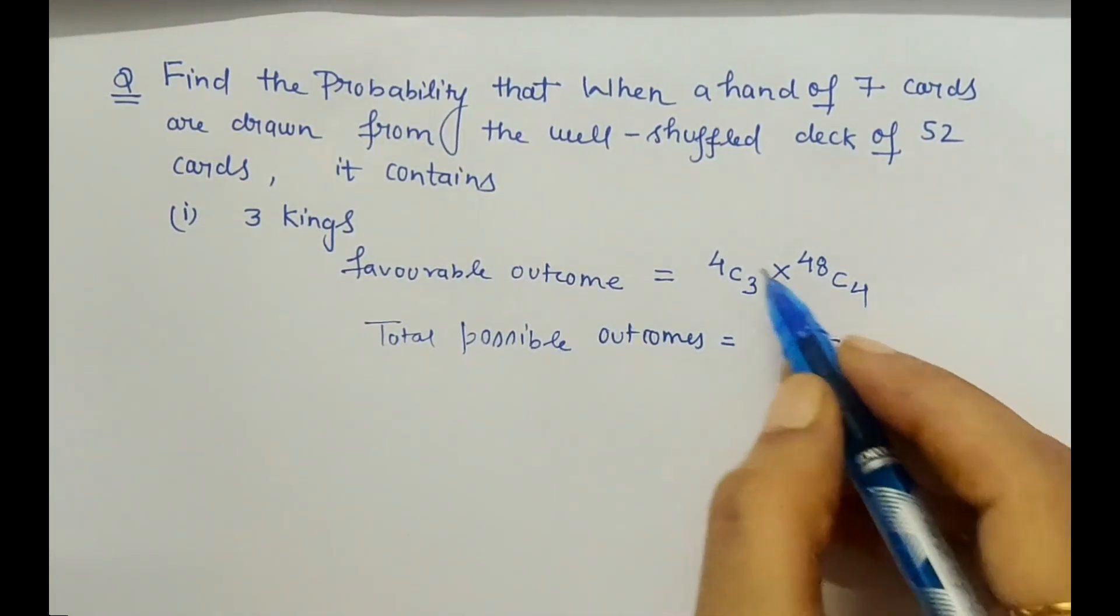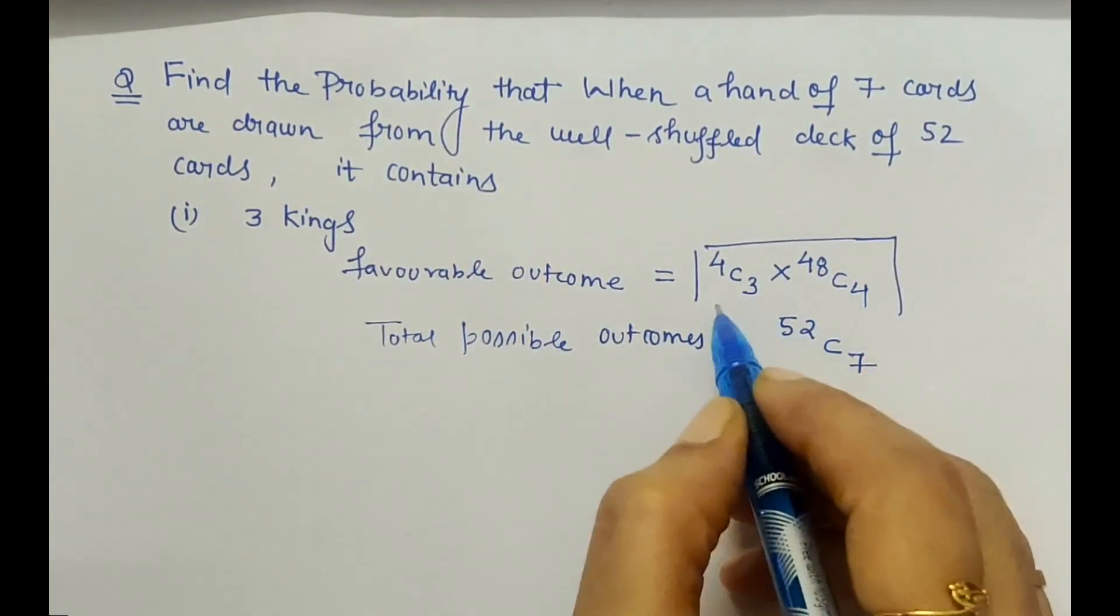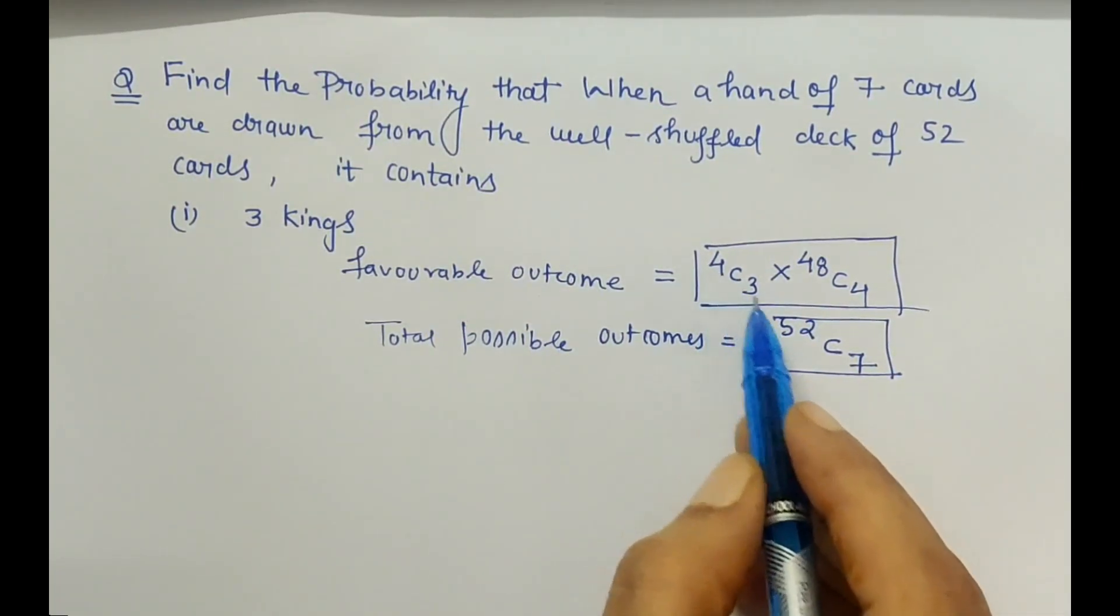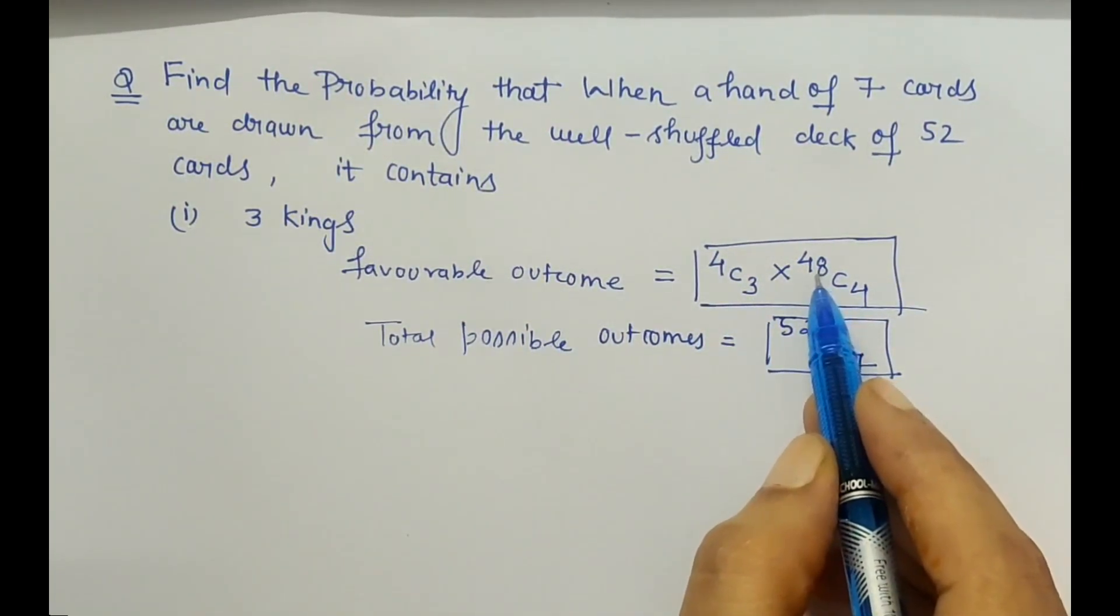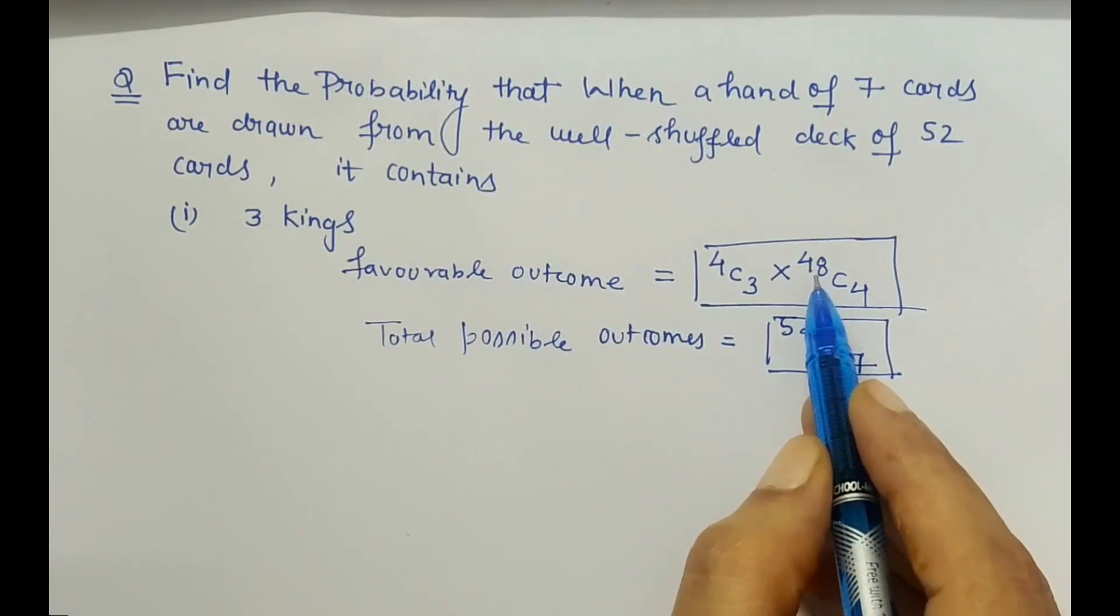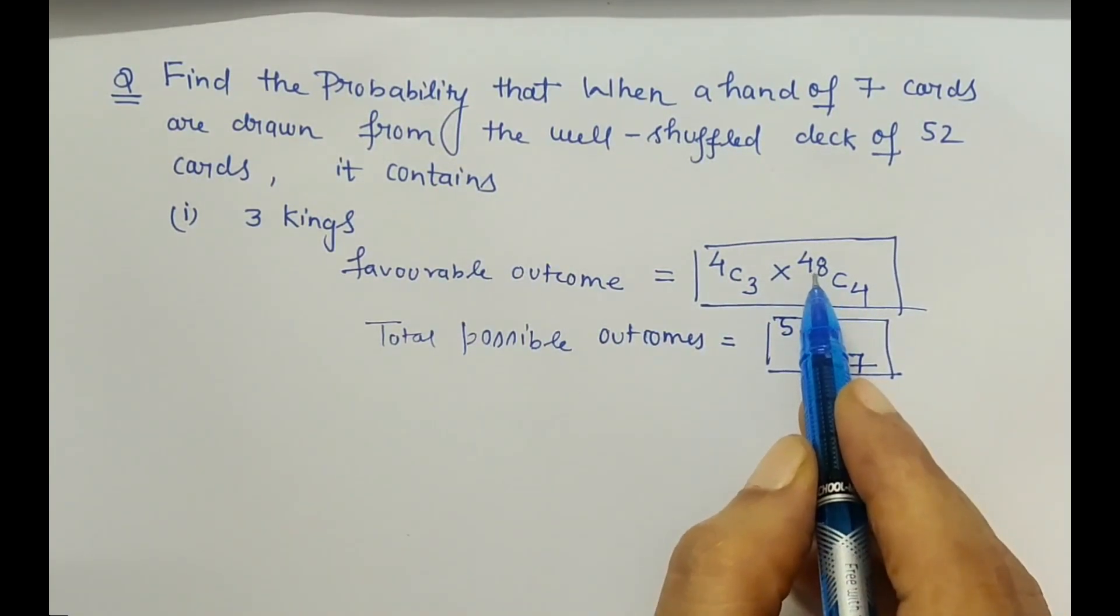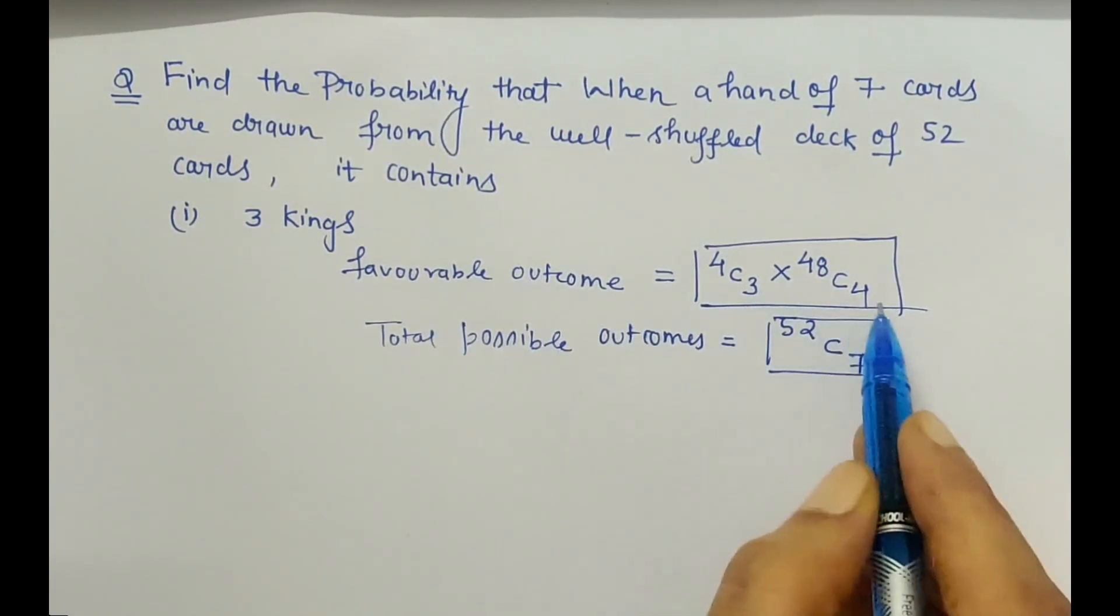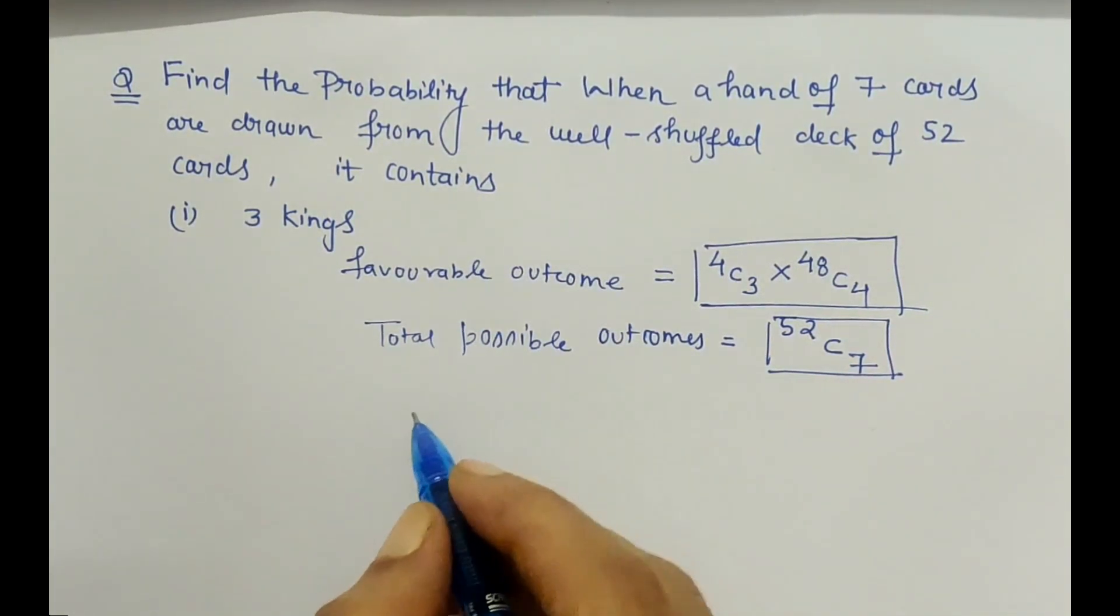I hope this is clear. Out of four kings, three kings; out of 48 cards, which means cards without kings are 48. Out of 48, we have to extract the remaining four, because three plus four equals seven cards we have to draw in total.